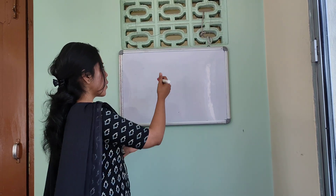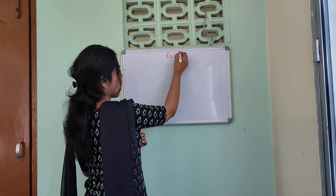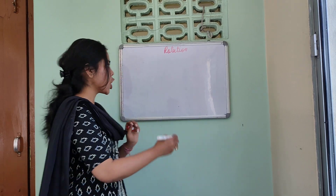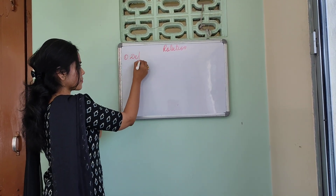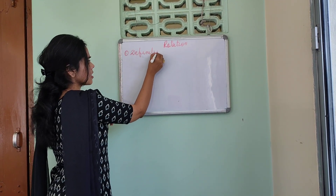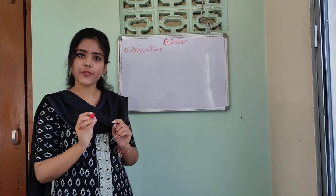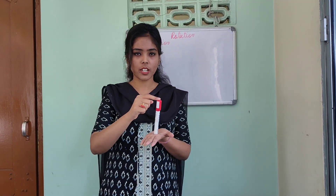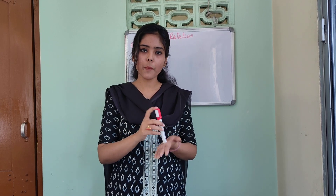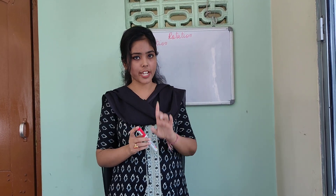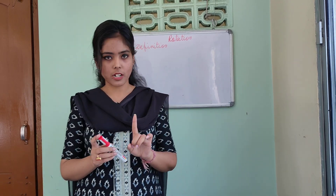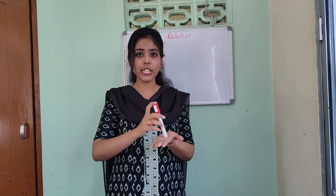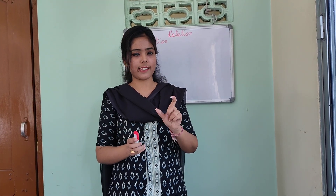Today we will discuss the rotation of Earth's surface. Under this rotation, we will discuss three things. First is the definition. Rotation is nothing but the spinning of the Earth on its own axis from west to east direction once in 24 hours. Basically, rotation means the spinning of Earth's surface on the basis of Earth's own axis.